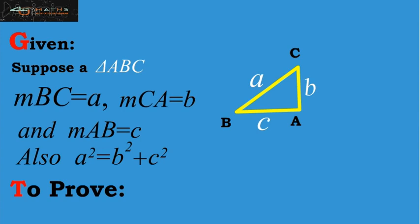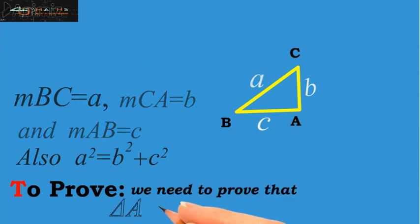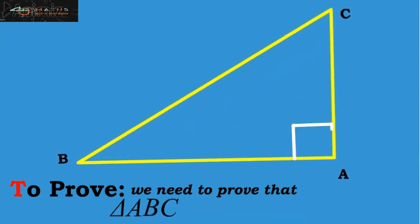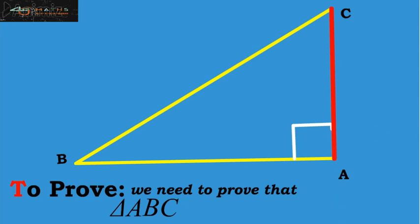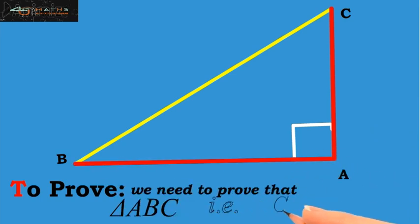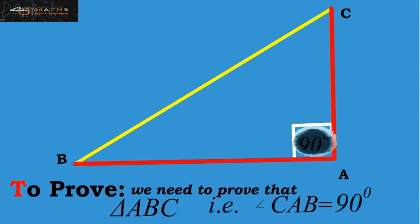To prove, we need to prove that triangle ABC is a right angle triangle. That is, the measure of the angle CAB is equal to 90 degree.